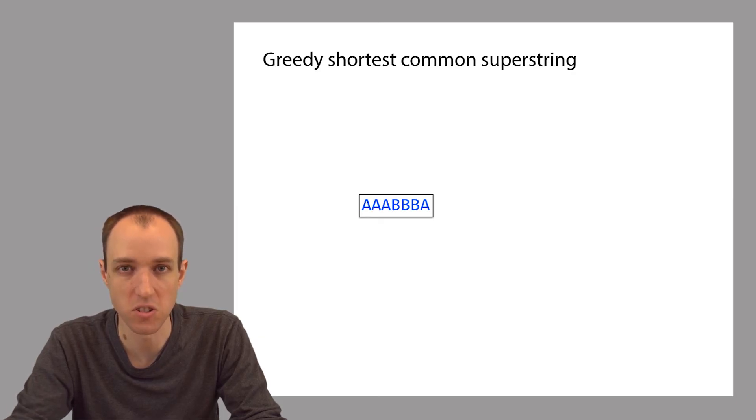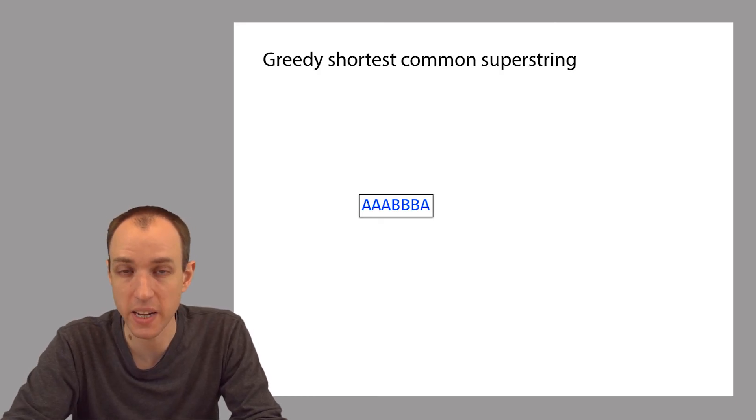The answer is sitting right in front of us. Once we've done all that merging, there's just one node left, and this node's label is the superstring that we've obtained from greedy shortest common superstring. If there happen to be multiple nodes at the end of this merging process, in other words, if after one merge we've run out of edges but there are still multiple nodes, then we can create the superstring just by concatenating the labels of those nodes together.